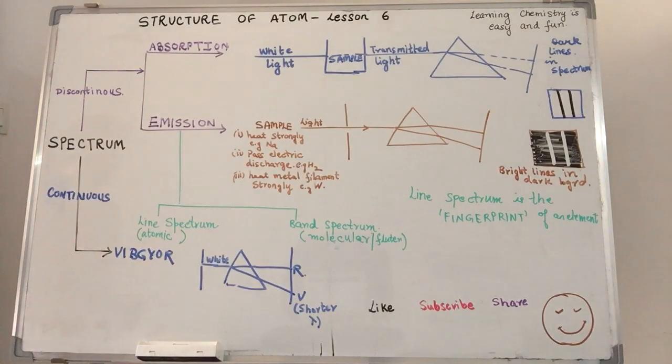Elaborating on Lesson 5 where we discussed the Electromagnetic Theory and the Electromagnetic Spectrum, we shall further be talking about the spectrum, what are its various types and what do they indicate.